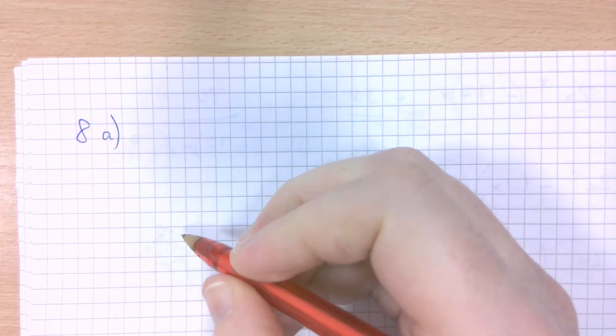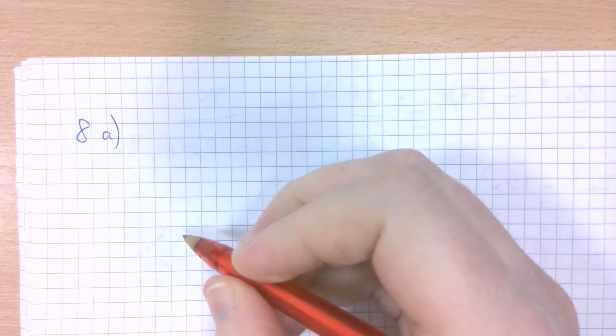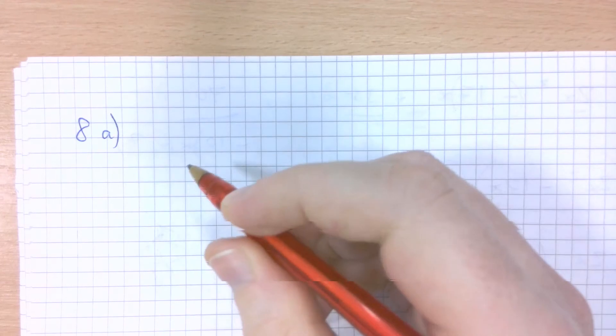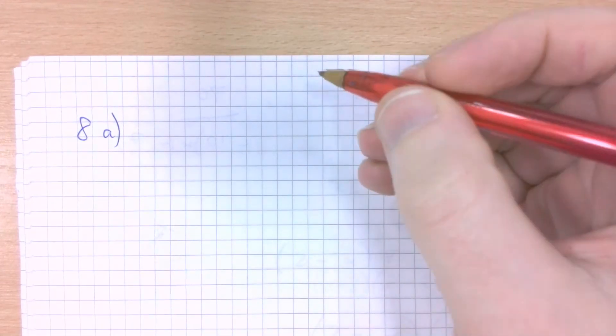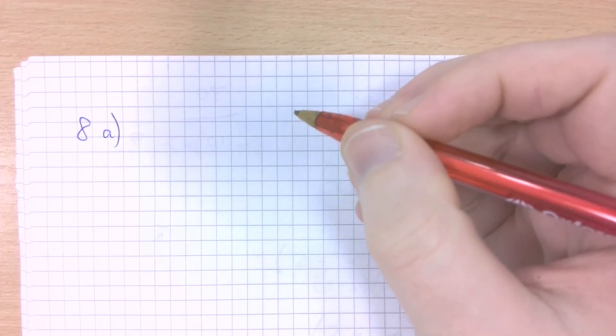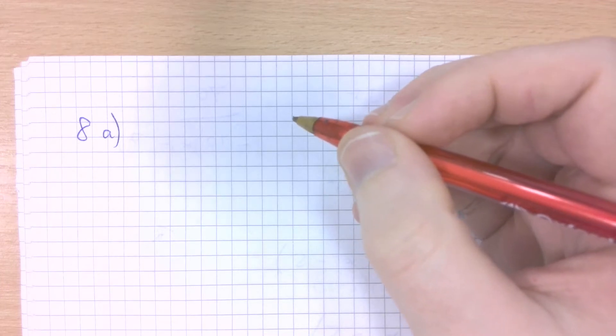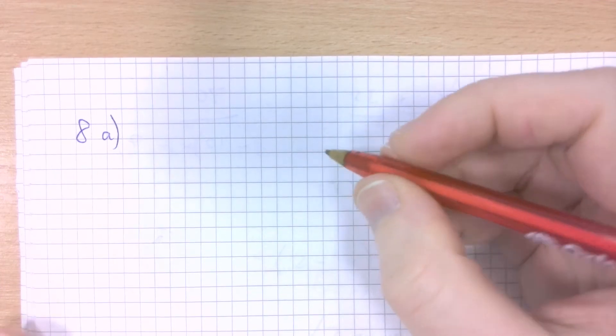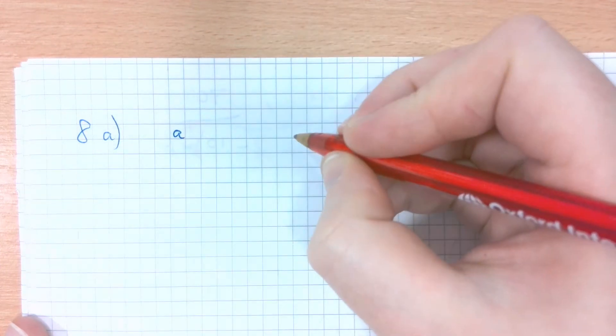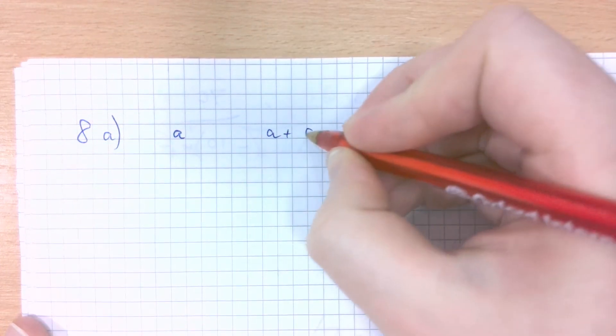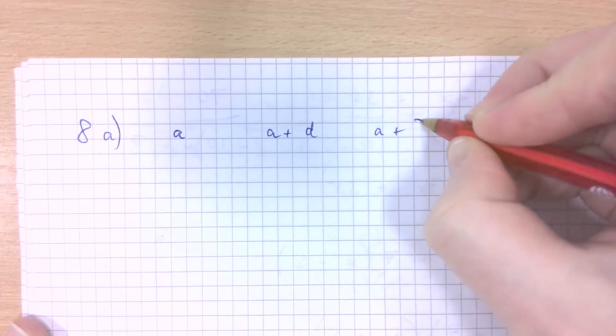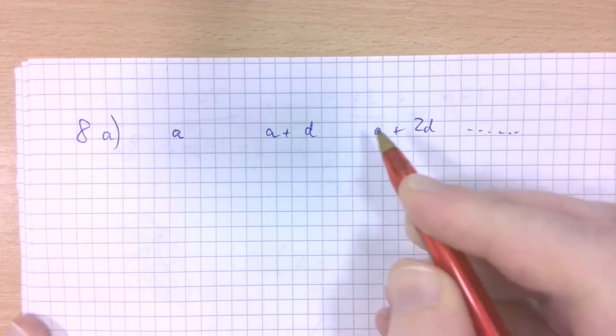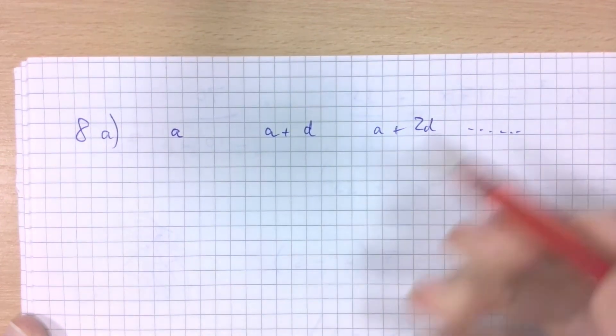Question 8. The second term of an arithmetic series is 95, and the fourth is 91. Find the first term and the common difference. For this, we need to revert back to how do we label up the terms of a sequence or series in terms of a and d. So the first term is always a, the second term is always a plus d, the third term is always a plus 2d, and so on.